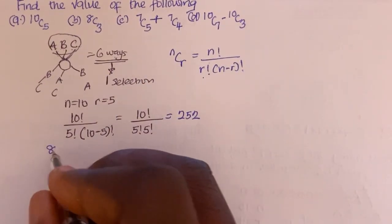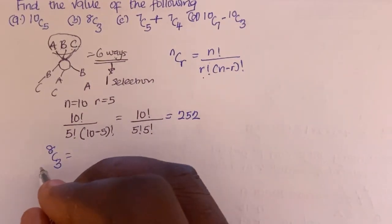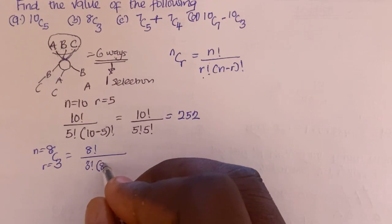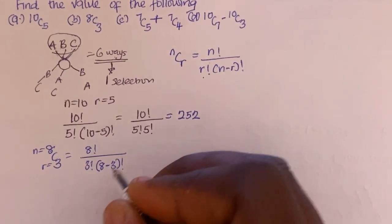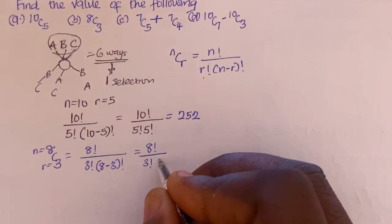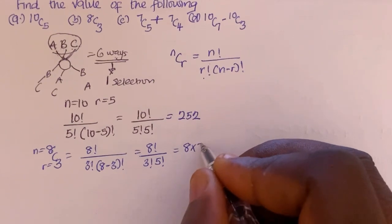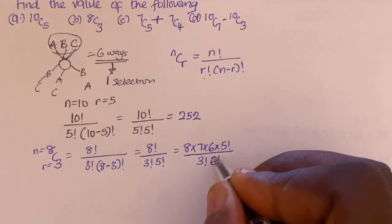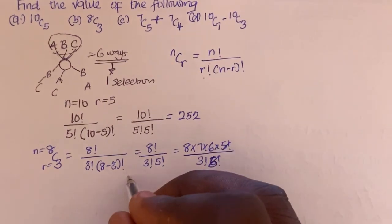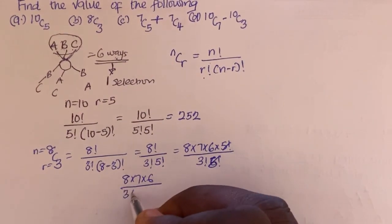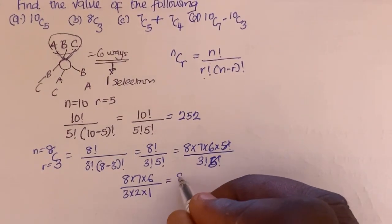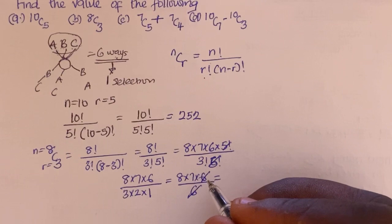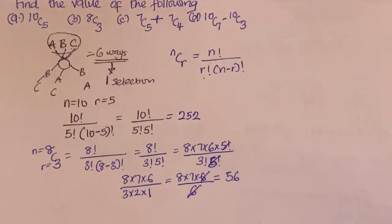The next one is 8C3, so n = 8 and r = 3. We have 8! divided by (3! × (8 − 3)!), which is 8! divided by (3! × 5!). This simplifies to (8 × 7 × 6) divided by (3 × 2 × 1). Since 3 × 2 × 1 = 6, the 6 cancels, leaving 8 × 7 = 56.